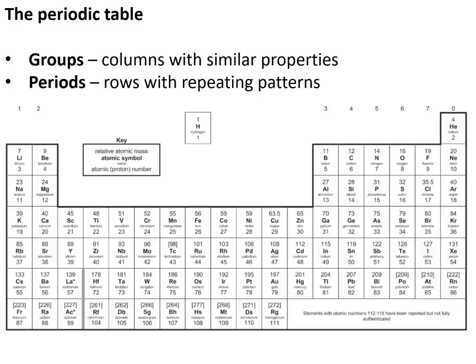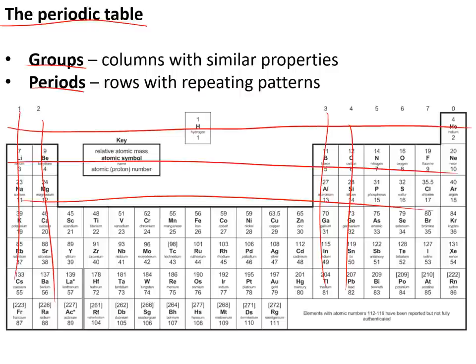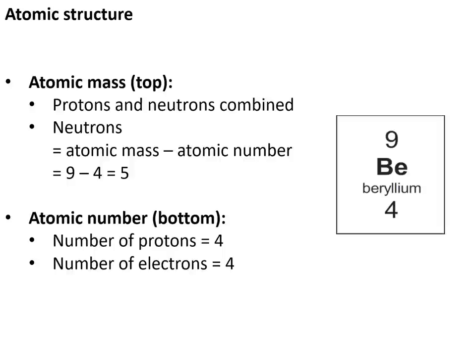The periodic table is arranged in groups and periods. Groups are the columns — 1, 2, 3, 4 and so on — and periods are the rows — 1, 2, 3 and so on. Note that hydrogen does not belong in any group.